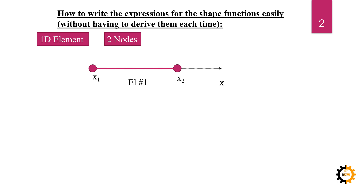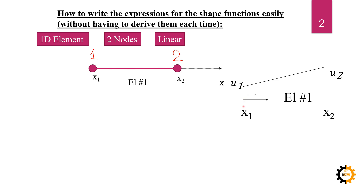It has two nodes, which we number as node number one and node number two. When we apply some forces and try to find the displacements at these two nodes, they will be represented with a polynomial that will be linear. That is why this 1D element with two nodes is also called a linear element. When there are two nodes, it will always be linear. If we represent the displacement of each node with u1 and u2, the displacement will follow a straight line.